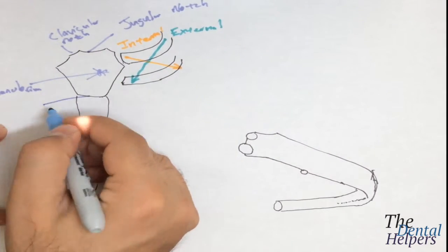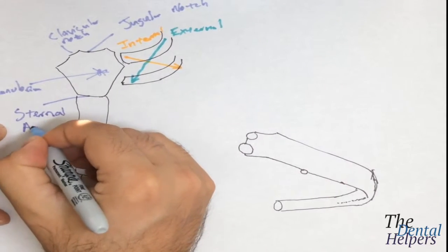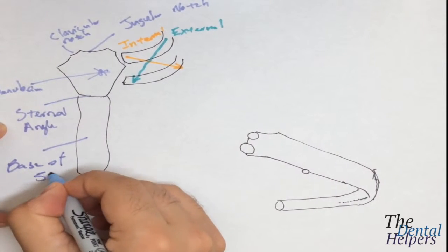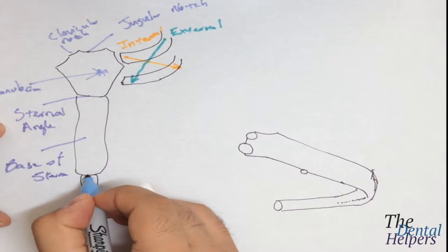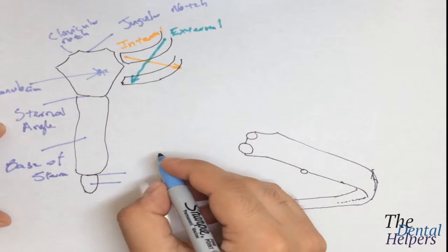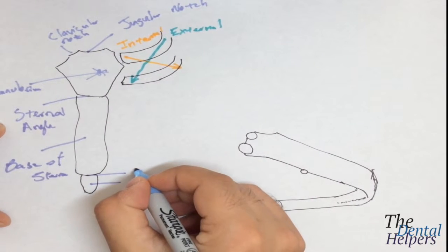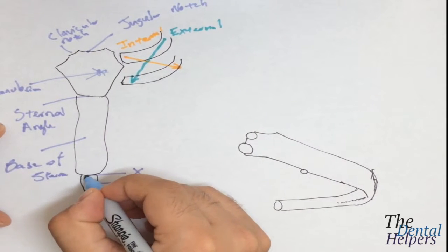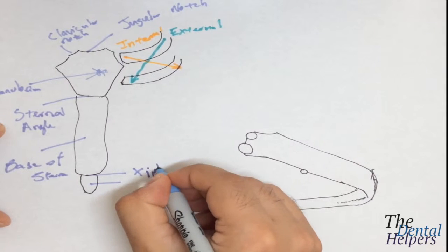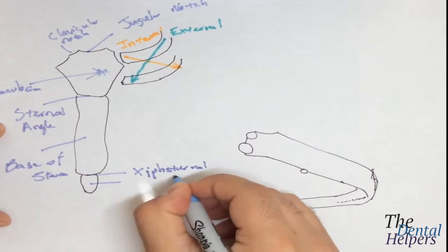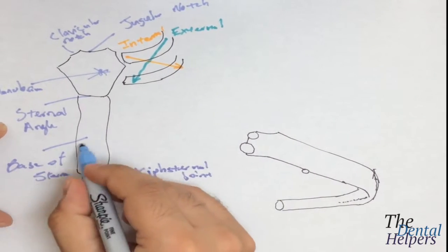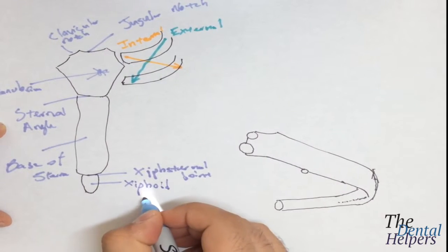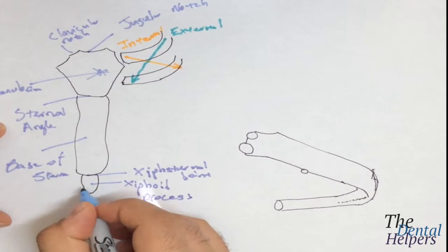This area is very important — this is called the sternal angle. This is the base of the sternum. The point of attachment for the sternum to this little base is called the xiphisternal joint. The xiphi comes from the xiphoid process, which is this last little bit right here.